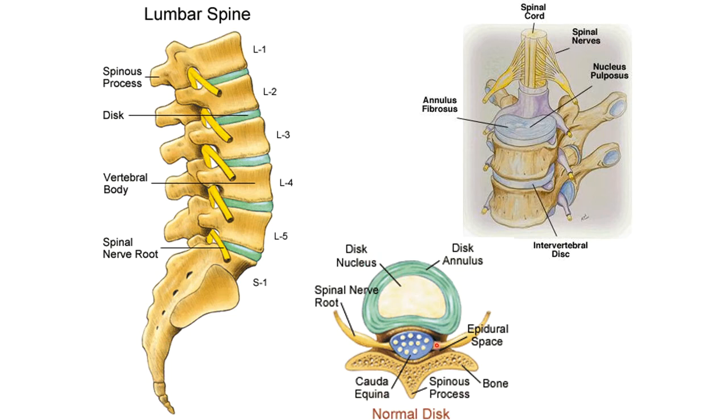Here's an axial view where you can see the cauda equina and the exiting nerve roots, and again the intimate relationship of the disc — any pathology here may cause problems.